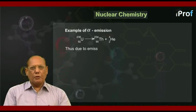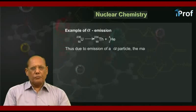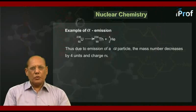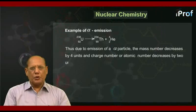uranium-92-238 changing into thorium-90-234 plus He-4-2. Thus, due to emission of an alpha particle, the mass number decreases by four units and charge number or atomic number decreases by two units.